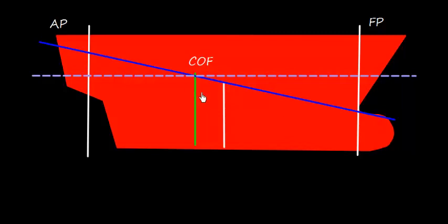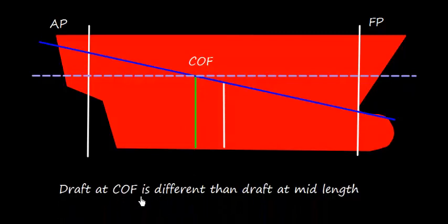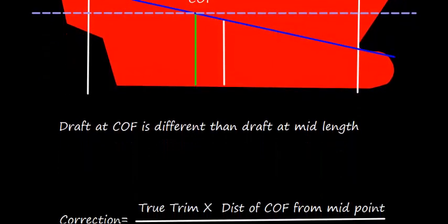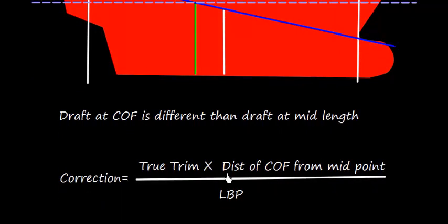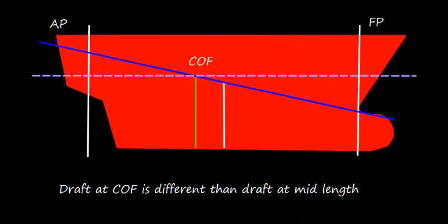The draft at the center of flotation is different from the draft at mid-length, so we need to apply a correction. This correction is due to trim. If this is the waterline, then this is the forward draft and this is the aft draft. The correction is: true trim multiplied by the distance of the center of flotation from the midpoint, divided by LBP.